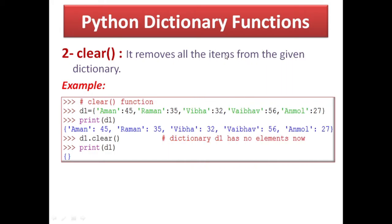Another function is clear(). It removes all the items from the given dictionary — dictionary से सभी key-value pairs को delete कर देता है। Suppose D1 आपके पास ऐसी dictionary है। You can see this dictionary has 5 key-value pairs. आपने लिखा d1.clear() तो सारे elements clear हो गए, but the dictionary remains behind — still it is occupying some memory. D1 dictionary is stored somewhere in memory.